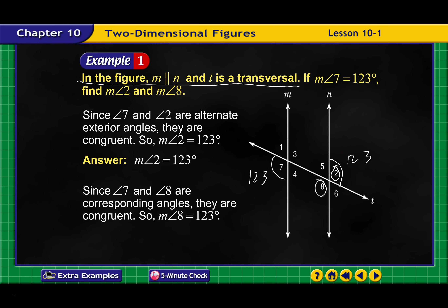Since angles 7 and 8 are corresponding angles, they are also congruent because they are in the same position compared to the transversal. Therefore, that one is also 123 degrees — so the measure of angle 8 is 123 degrees as well.